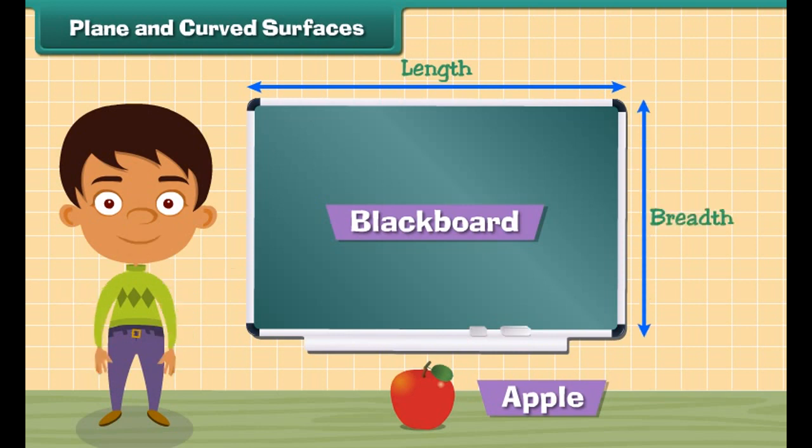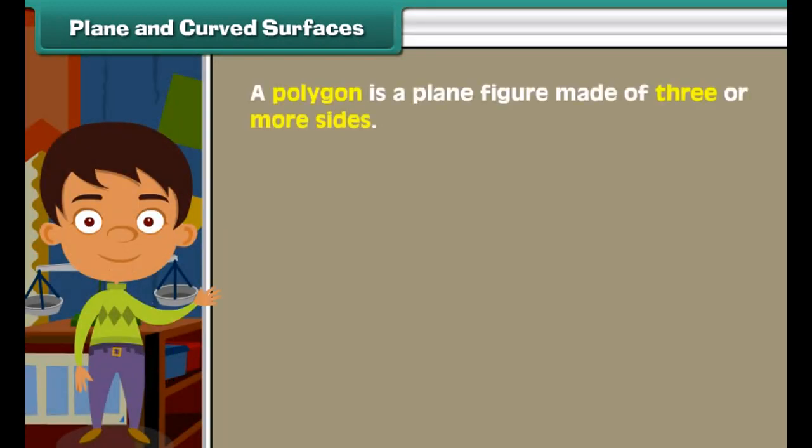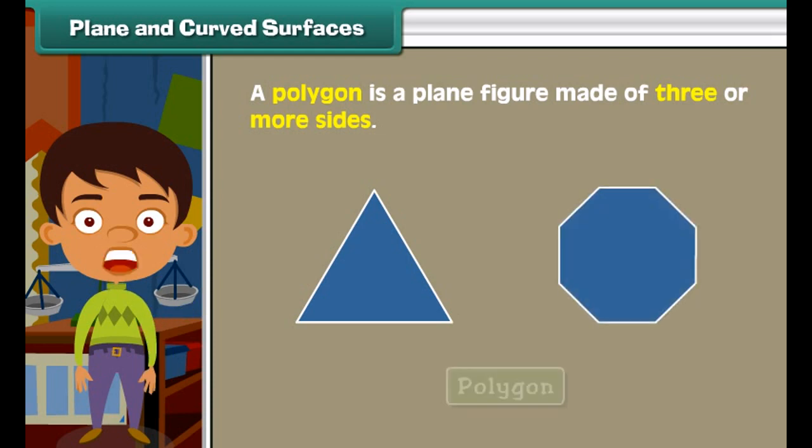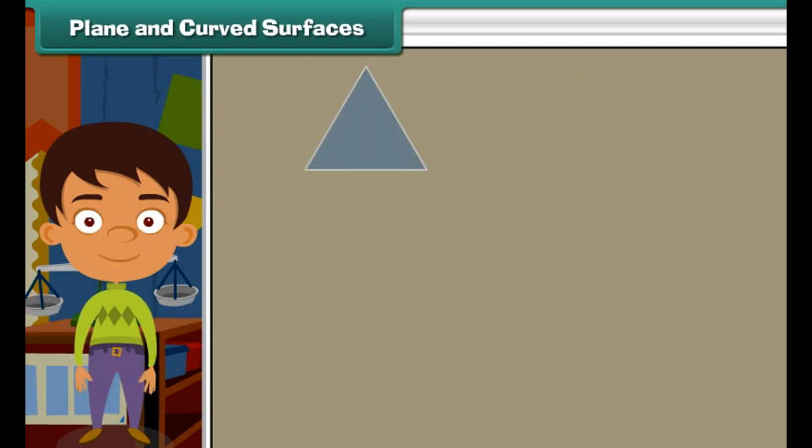Plane and curved surfaces. Look at these two objects: blackboard and an apple. Blackboard's plane surfaces have length and breadth. When you touch the surface of an apple, its surface is not straight; this is a curved surface.